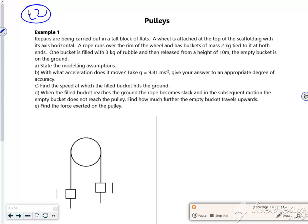So we've got repairs being carried out in a tall block of flats. The wheel is attached at the top of the scaffolding with its axis horizontal. Rope runs over the rim of the wheel, there's buckets of mass 2kg tied at both ends.